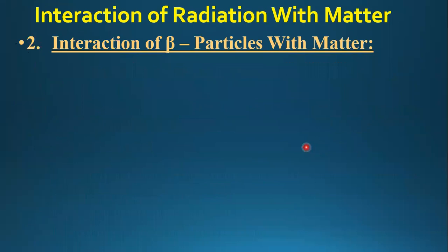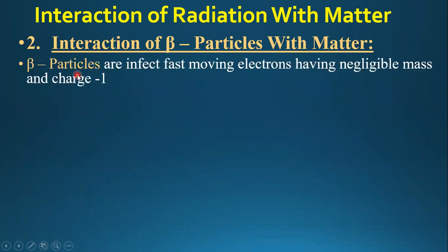Now we discuss the interaction of beta particles with matter. Beta particles are in fact fast-moving electrons having negligible mass and a charge of minus one.